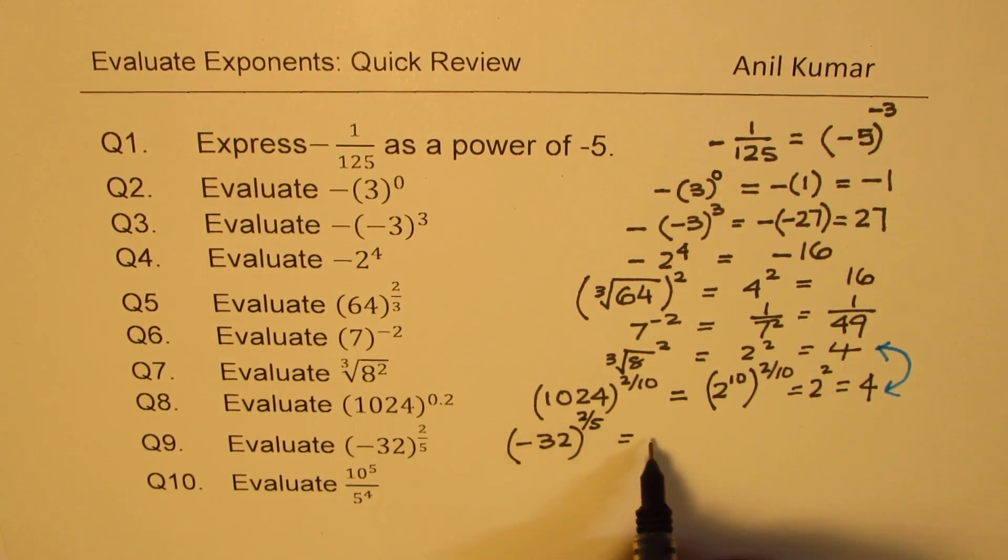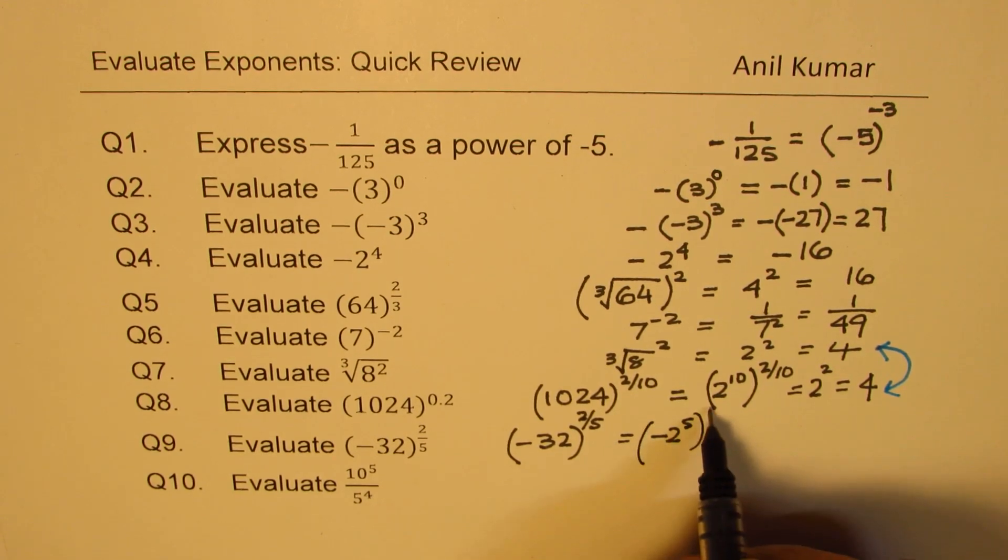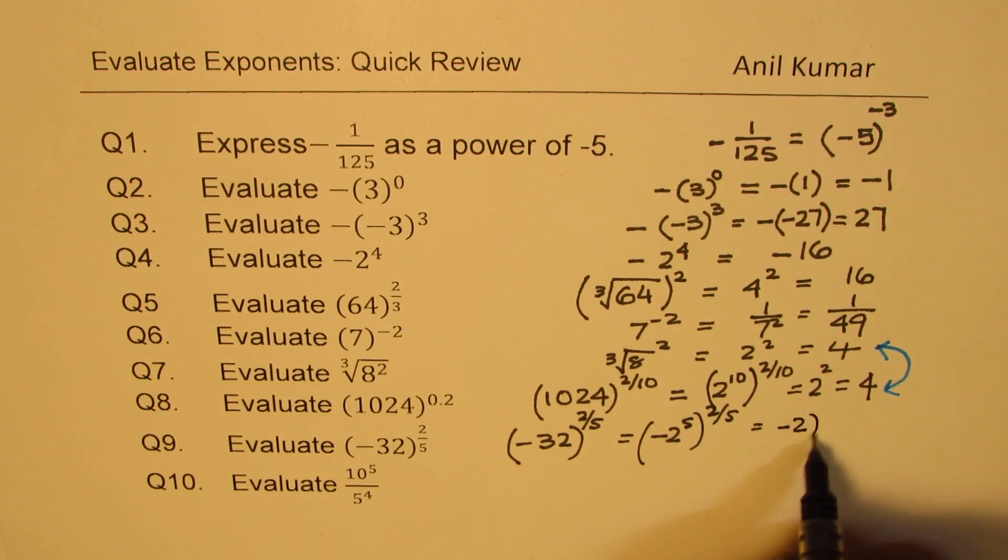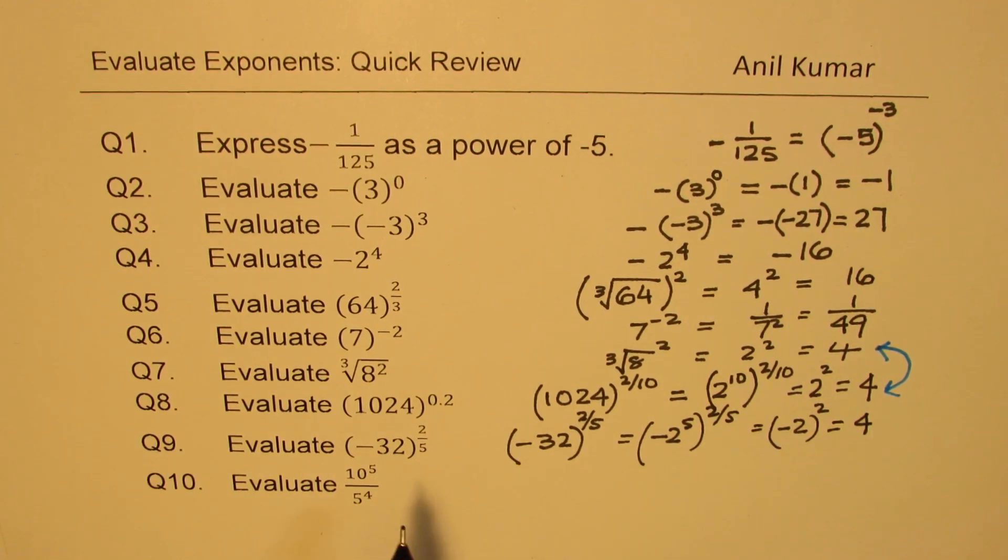Let me just rewrite the equation. Now 32 is 2 to the power of 5, so we'll write 2 to the power of 5 to the power of 2 over 5. So this 5 and 5 cancels, so we get minus 2 to the power of 2, which is also 4. Perfect.